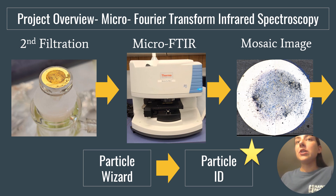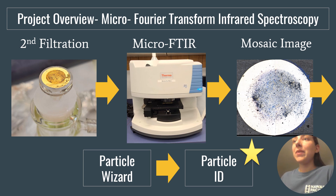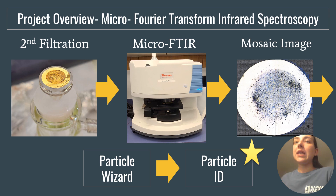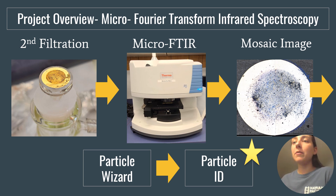The software used in this process will automatically compare each spectrum to a preset library with a variety of spectra, and will automatically identify the particles based on comparisons to the library spectra. The magic of automation is that rather than manually taking each spectrum of each particle, we can, after a few hours of waiting, get a complete report on all of the particles — on all of their identities and their size as well.